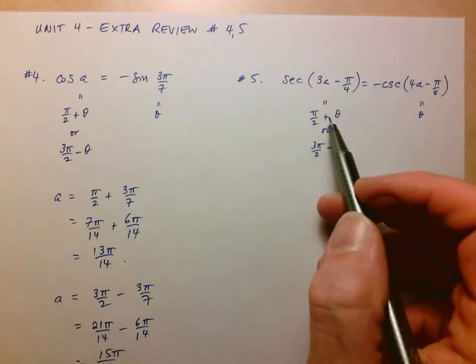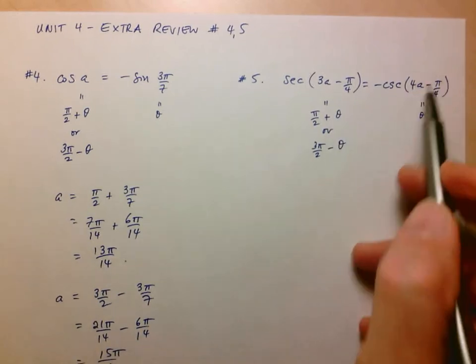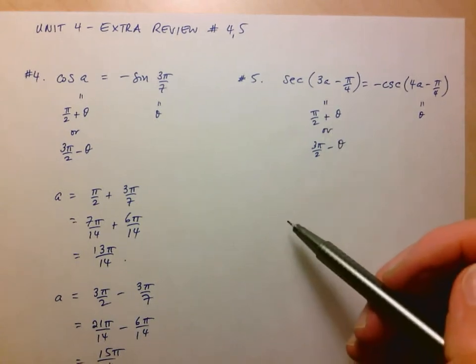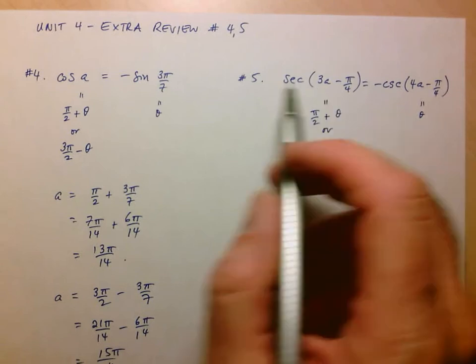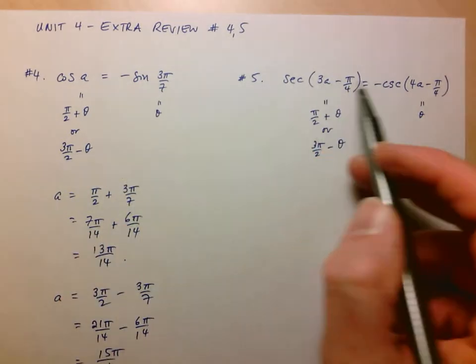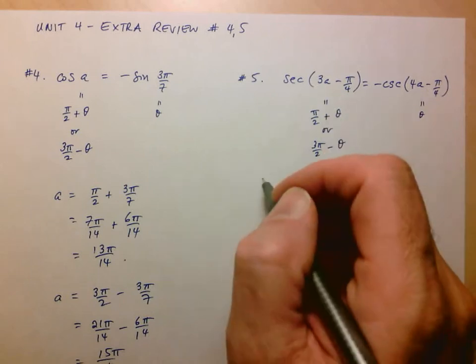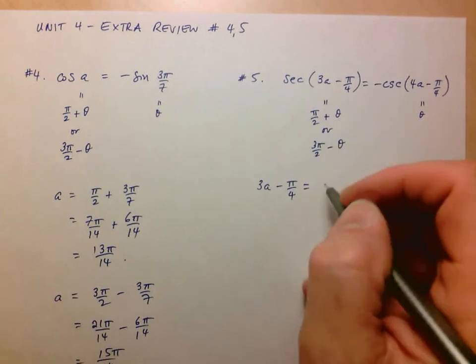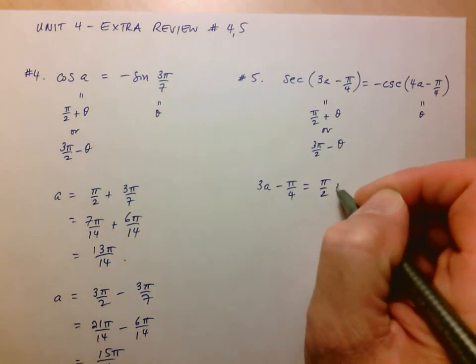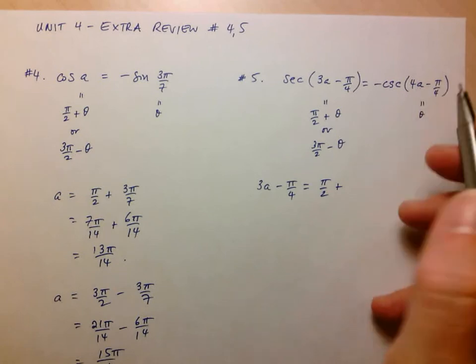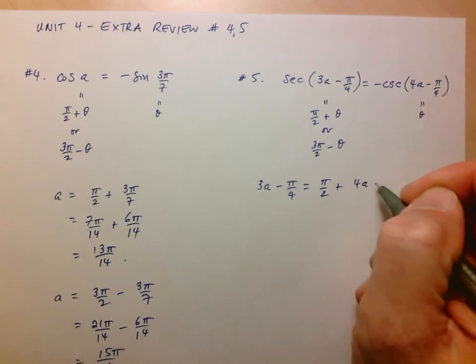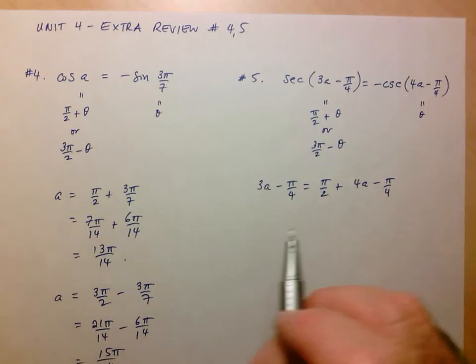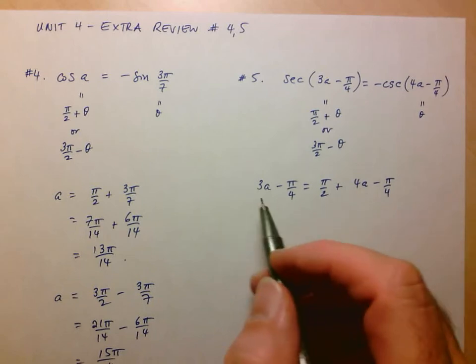If I call this thing here theta, then this expression in the brackets has to be equal to either π over 2 plus theta or 3π over 2 minus theta. In other words, if we think of this as being something in the first quadrant, then this is going to be either in the second or the third. So now let's do the same thing, except the only difference between these two is the expressions are more complex.